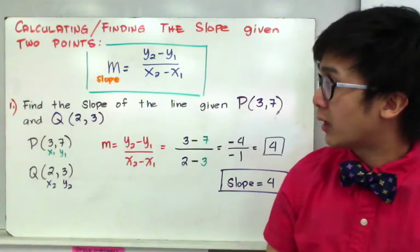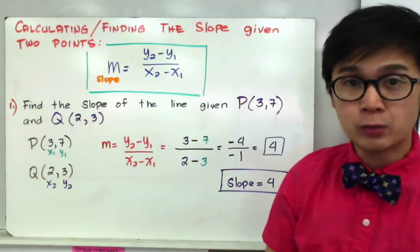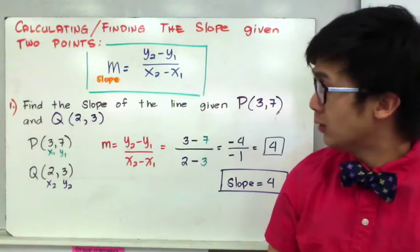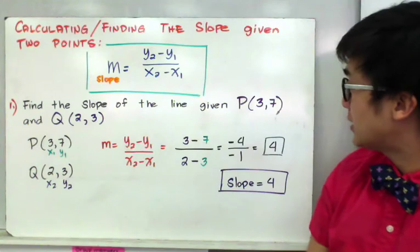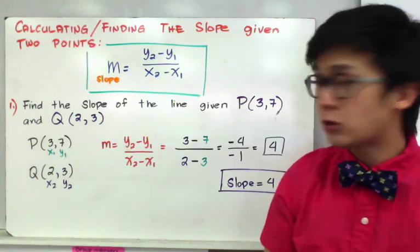Now let's use the formula in finding the slope of our example number 1. For the first example, we need to find the slope of the line given two points. The first point is P, which is 3, 7, and the second point is Q, which is 2, 3.